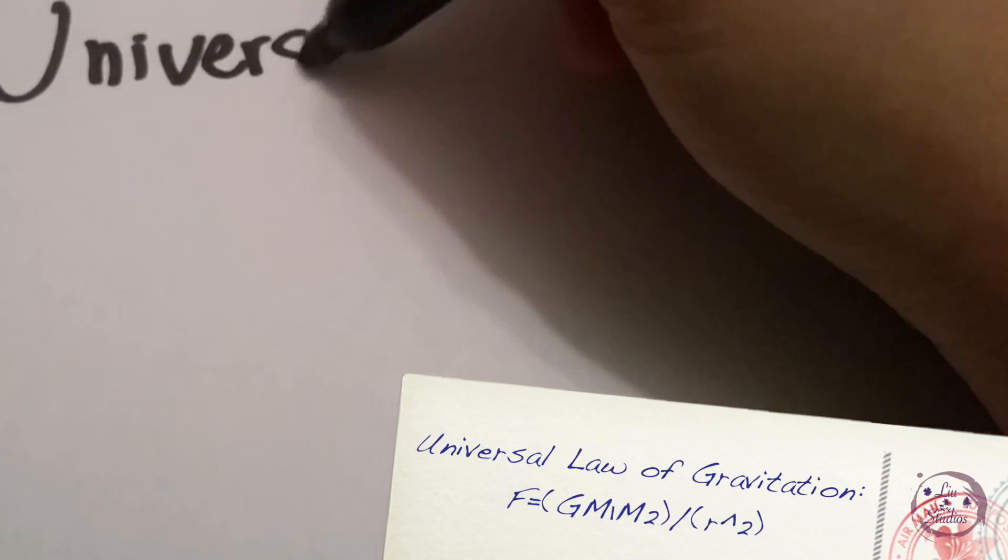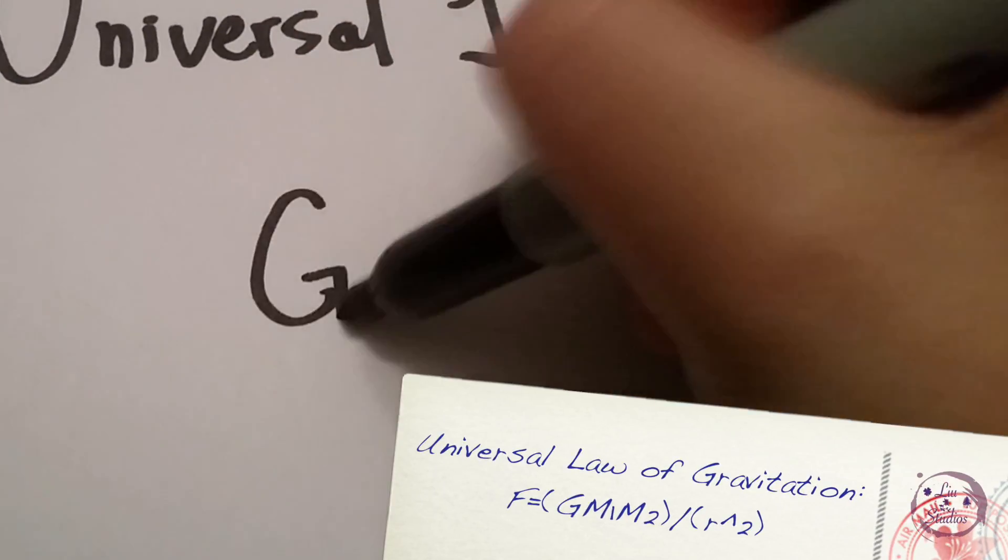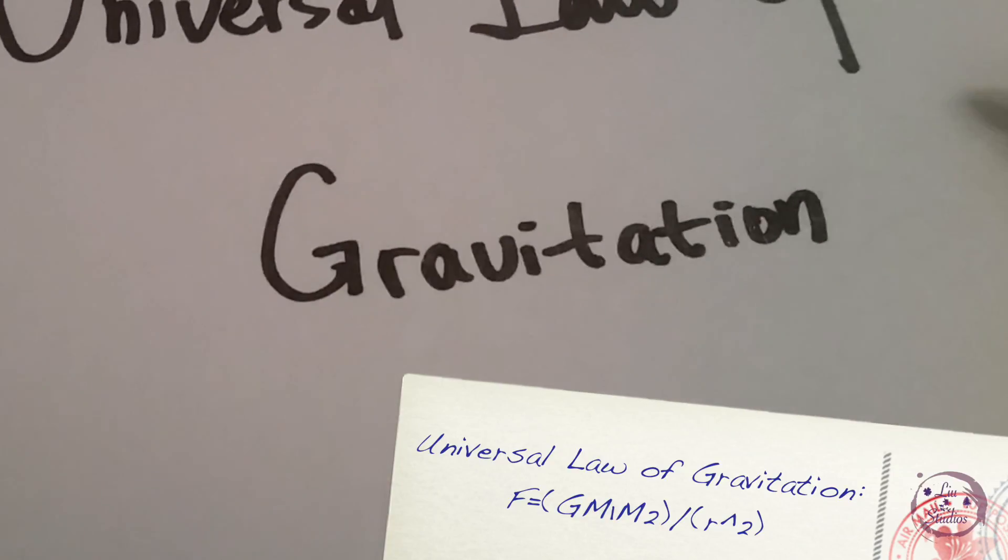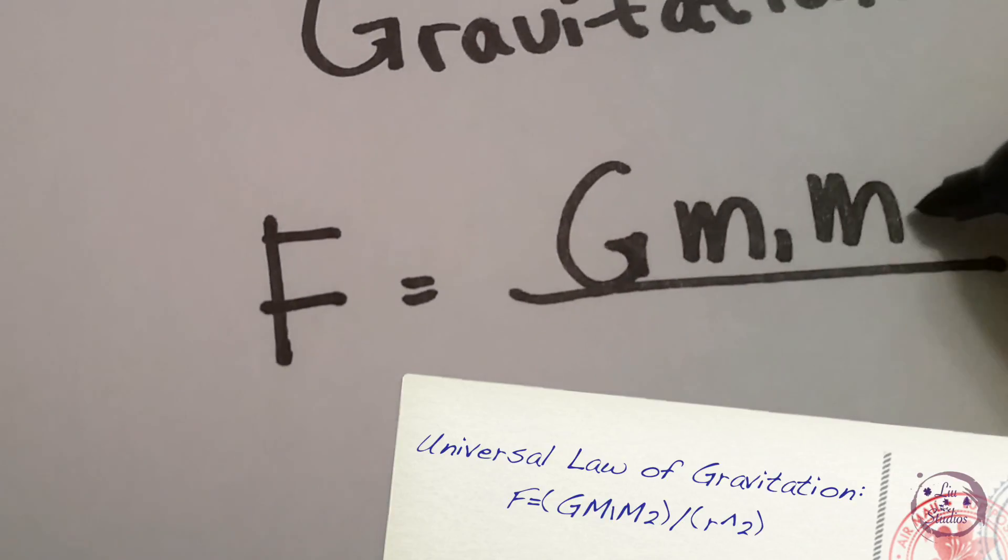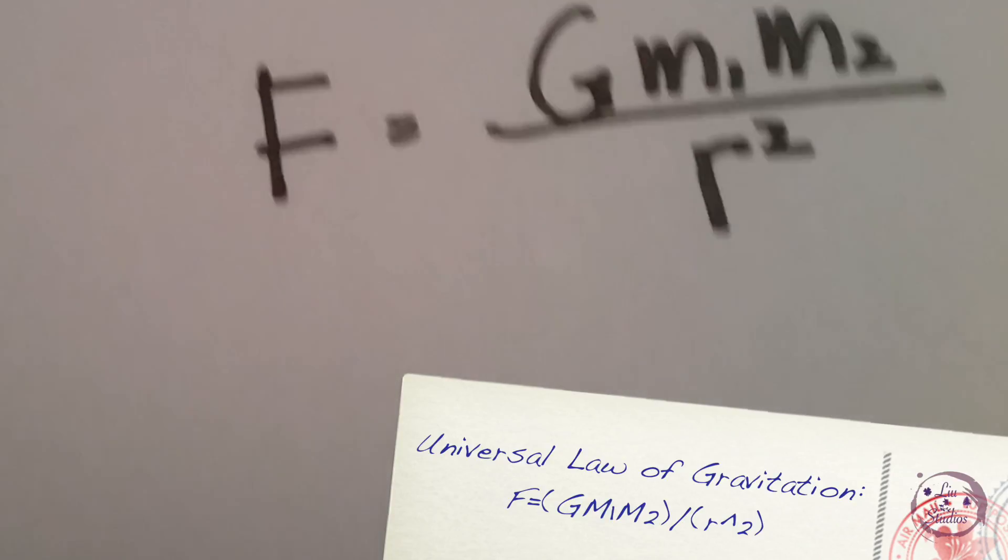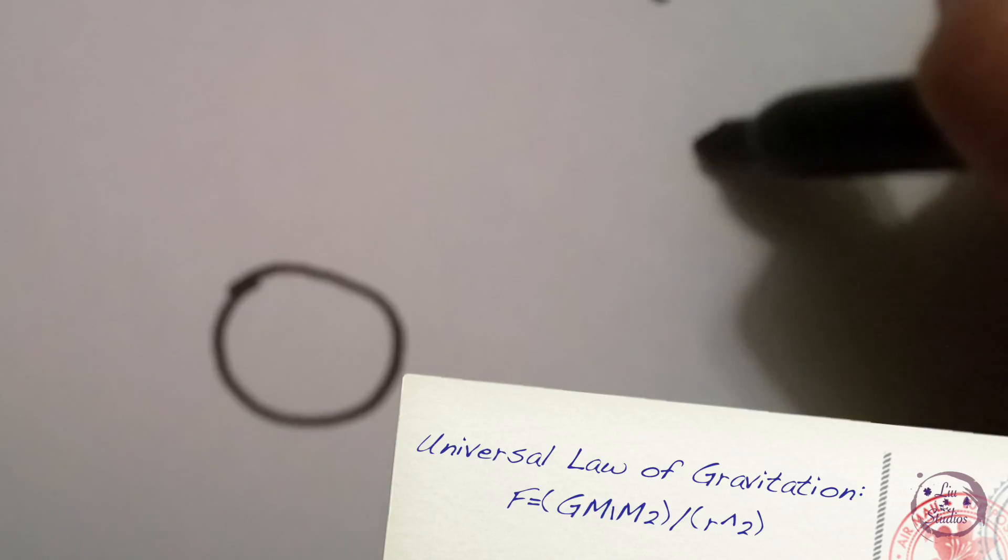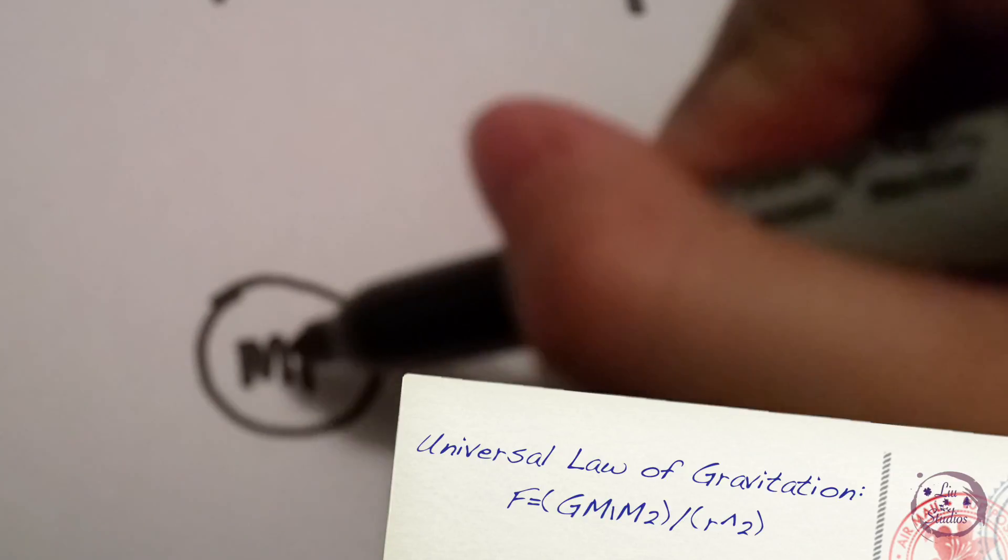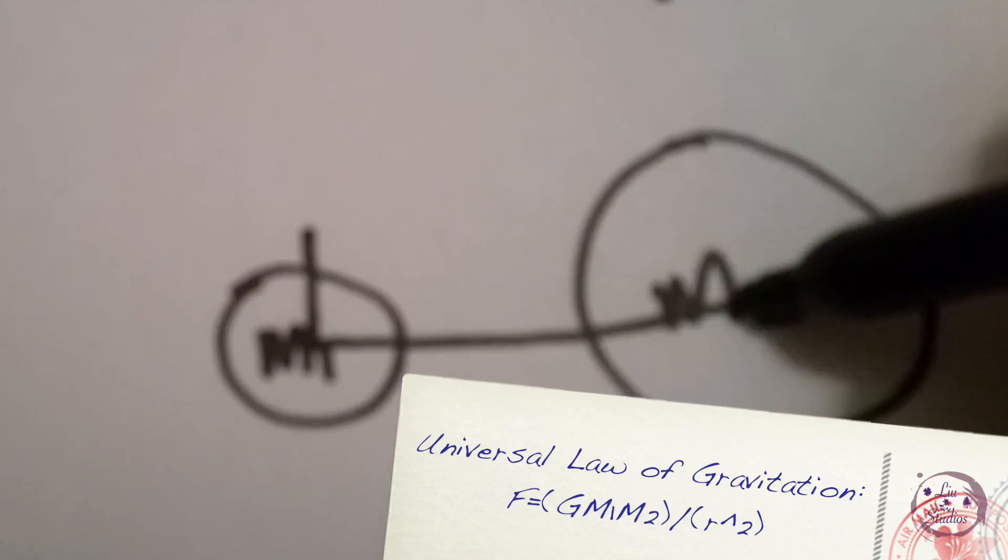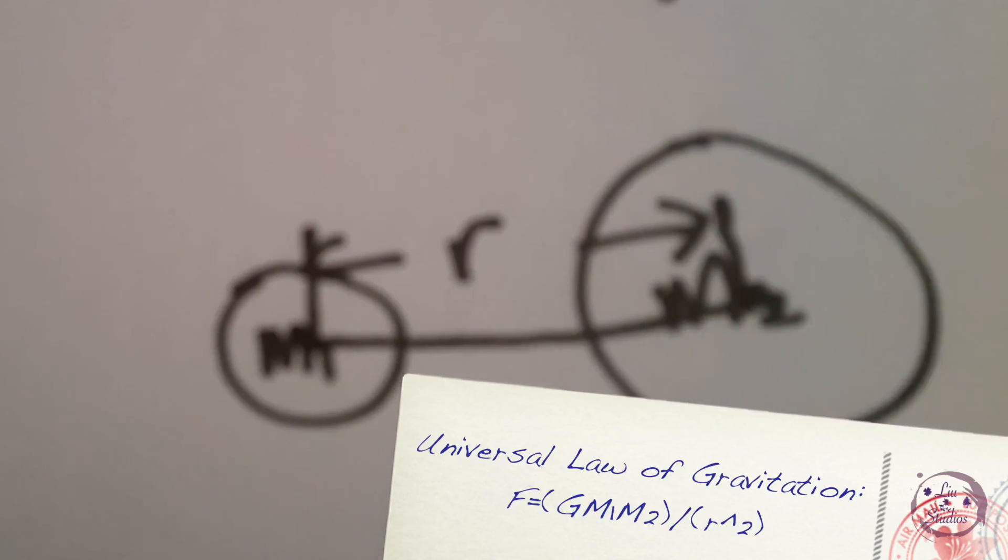First, recall the universal law of gravitation: F = G(M1)(M2)/r². The gravitational force between two objects with mass M1 and M2 is F, and r is the distance between the center of mass M1 and M2.